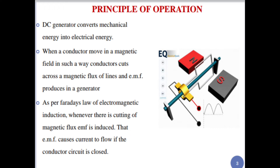As per Faraday's law of electromagnetic induction, whenever there is a cutting of magnetic flux, an EMF is induced. That induced EMF causes current to flow if the conductor circuit is closed. So this is the principle of operation of a DC generator.